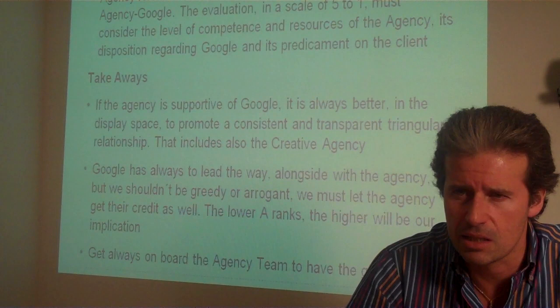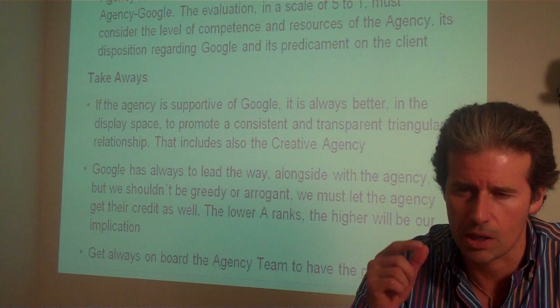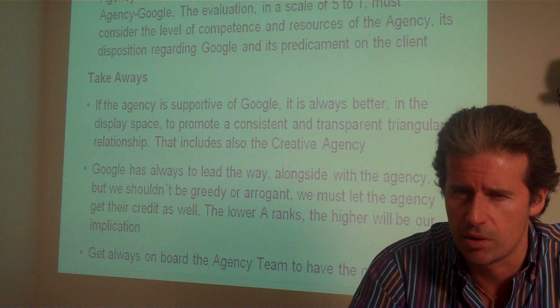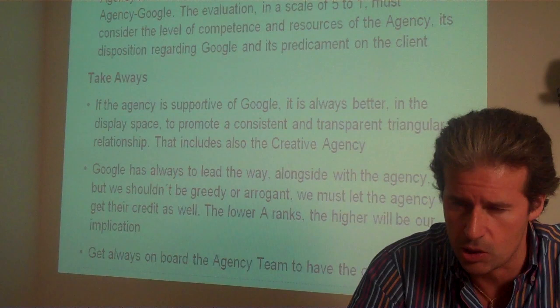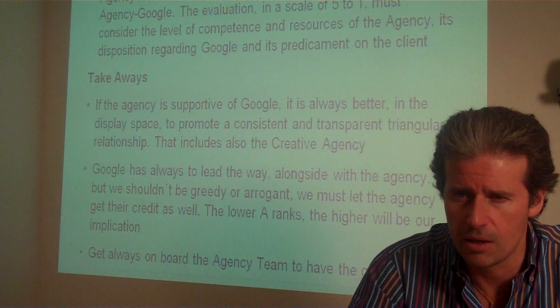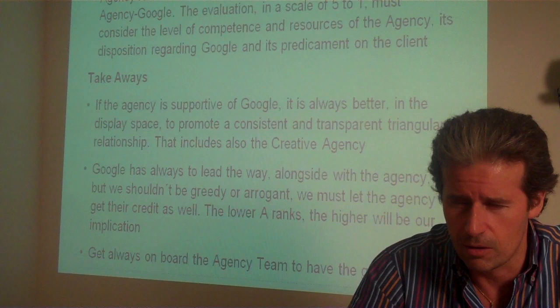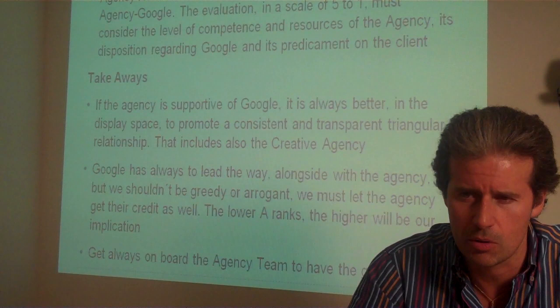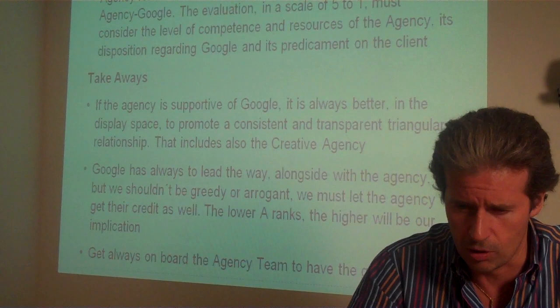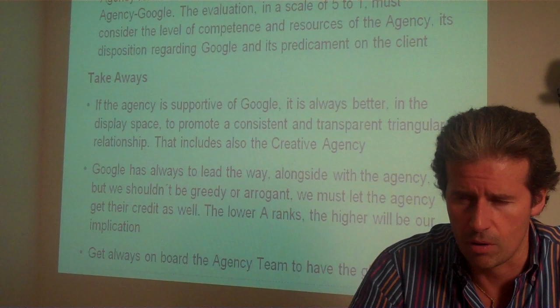E for Agency. Agency refers to the existence of a trilateral relationship: client, agency, Google. The evaluation on a scale of 5 to 1 must consider the level of competence and resources of the agency, its disposition regarding Google, and its influence on the client. If the agency is supportive of Google, it is always best to promote a consistent and transparent triangular relationship that also includes the creative agency. Google always has to lead the way alongside the agency, but we shouldn't be greedy or arrogant — we must let the agency get the credit. The lower the agency ranks, the higher our implication will be. Always get on board with the agency team to have the global vision. Sometimes an agency may seem insignificant to us because we have very few clients attending that agency, but for Google as a whole it could be a relevant partner, as they can have all the relevant clients across all verticals.